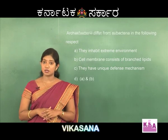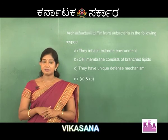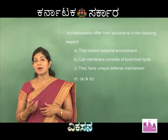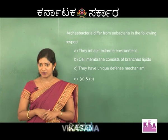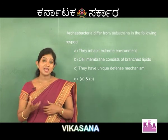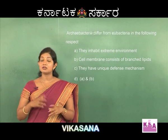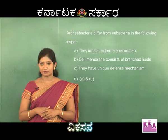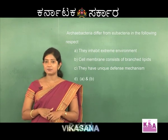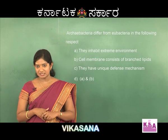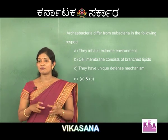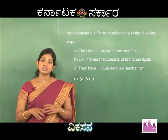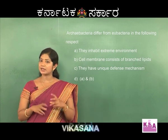For example, very high temperature, acidic medium, high salt conditions — in all these conditions where normal eubacteria die, archaebacteria can survive. The reason for this is that the cell wall of archaebacteria is not made up of peptidoglycan. It consists of a non-cellulosic polysaccharide as well as proteins.